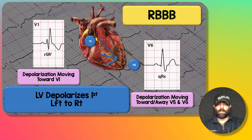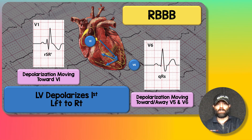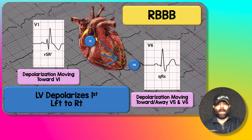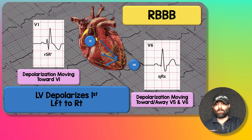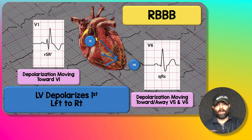Right bundle branch block is a block in the right bundle, so depolarization starts in the left ventricle first, moving down the left side of the heart and coming across the septum and apex back toward the right side. In V1, the initial depolarization moves away, giving a broad S-wave. As it moves back across to the right side, we get a predominant R-wave — the typical RSR-prime pattern. In V6, depolarization moves predominantly toward V6 giving a big R-wave, but then moves away to the right, producing a broad slurred S-wave at the end.